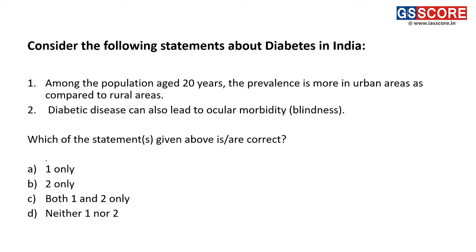Next question: consider the following statements about diabetes in India. First statement: among the population aged 20 years, the prevalence is more in urban areas compared to rural areas. This is correct — as per the National Diabetes and Diabetic Retinopathy Survey Report 2015–2019, prevalence of diabetes in this age group is higher in urban areas. Second statement: diabetic disease can also lead to ocular morbidity, meaning blindness. This is also correct. Both statements are correct, so the answer is both 1 and 2.